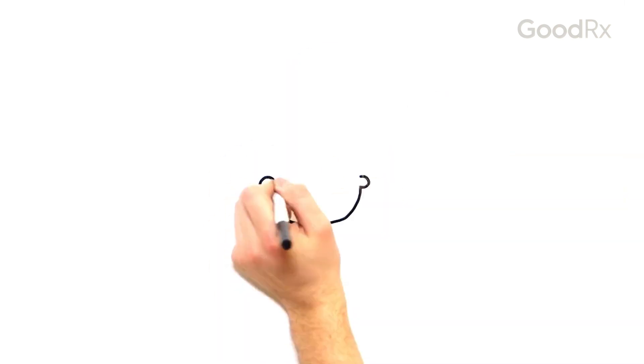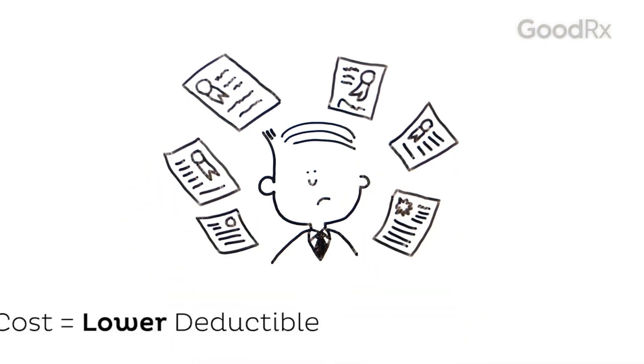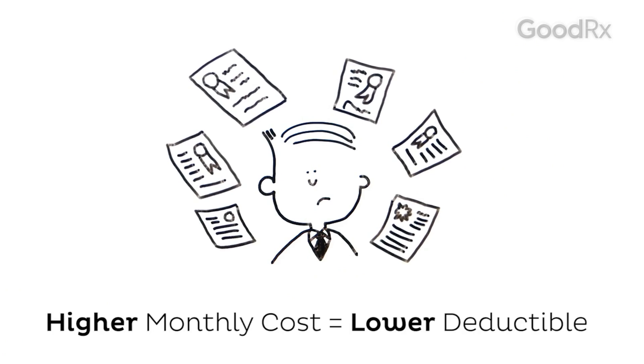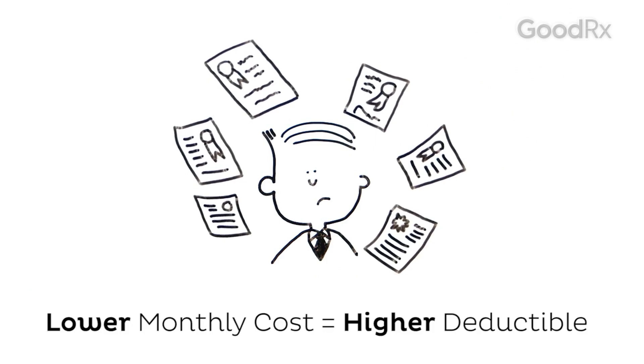Jim's plan is a standard type of plan, but there are other types, some with high deductibles and co-pays. Typically, plans that cost more every month have lower deductibles, and plans that cost less every month have higher deductibles.